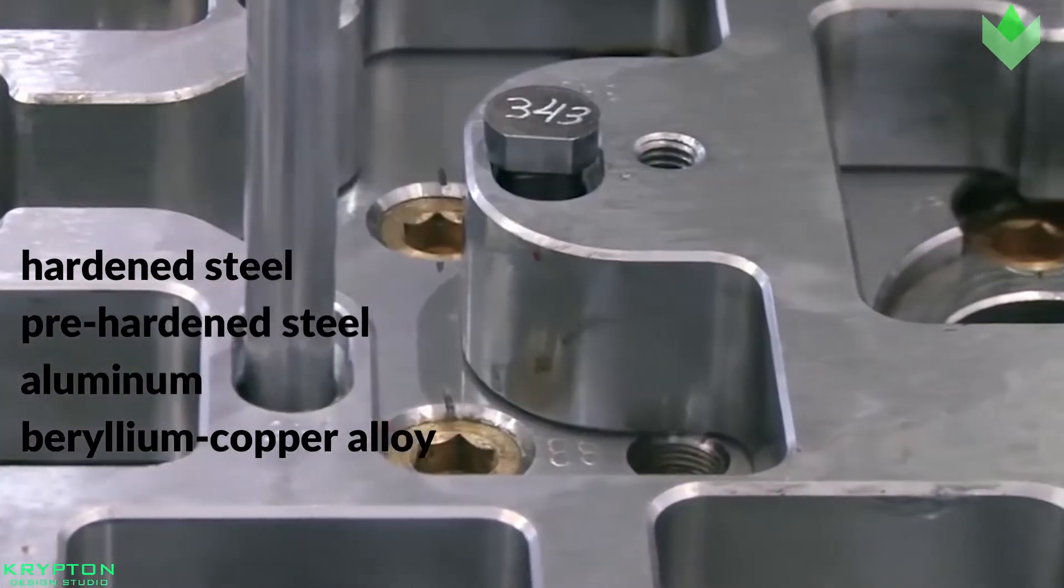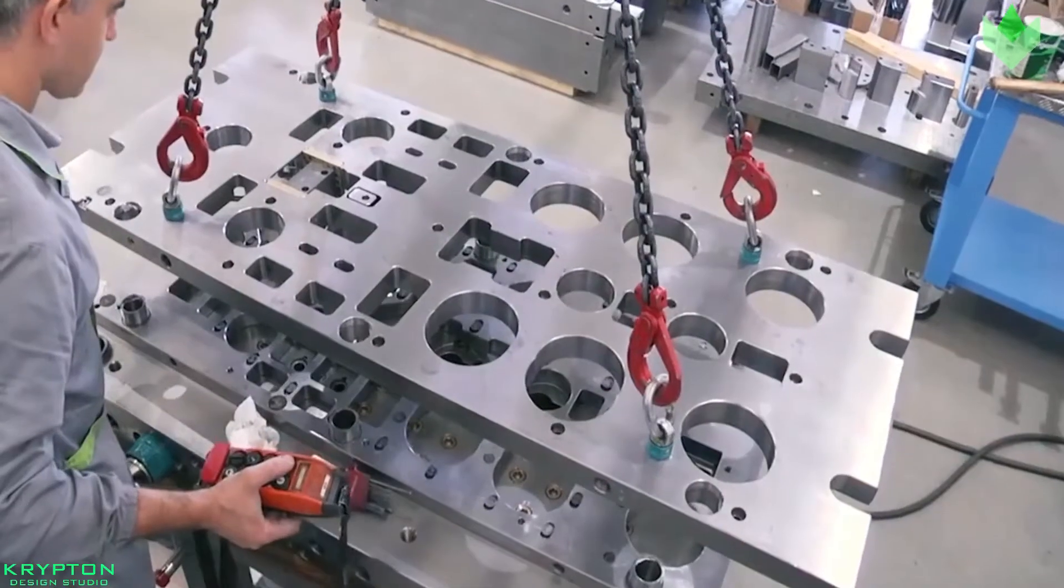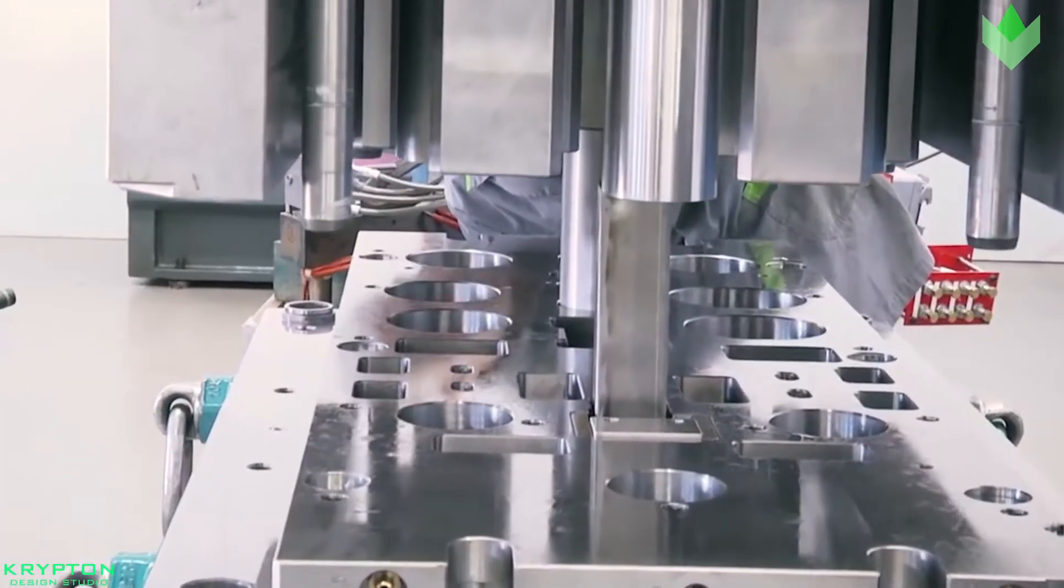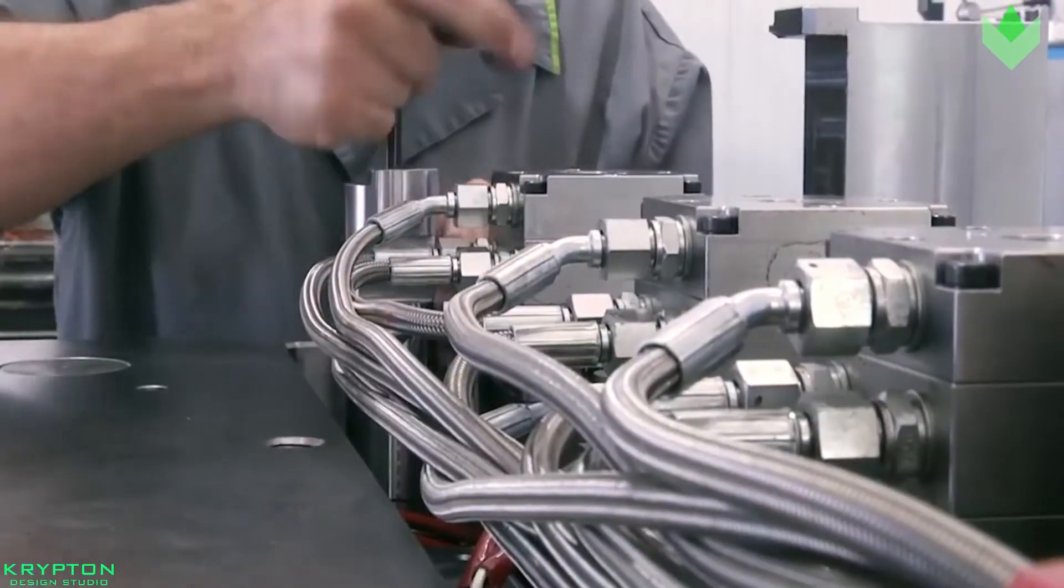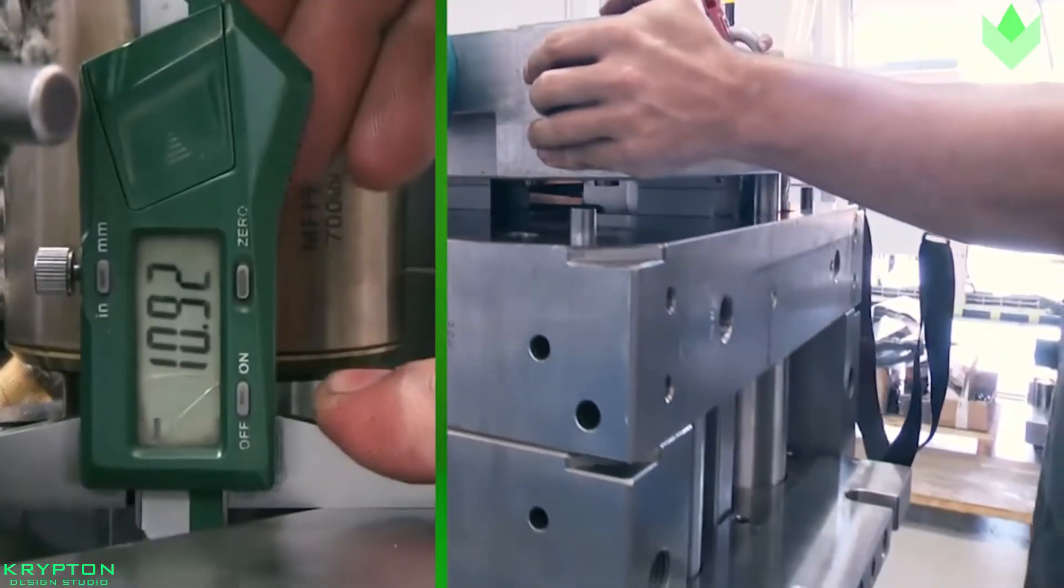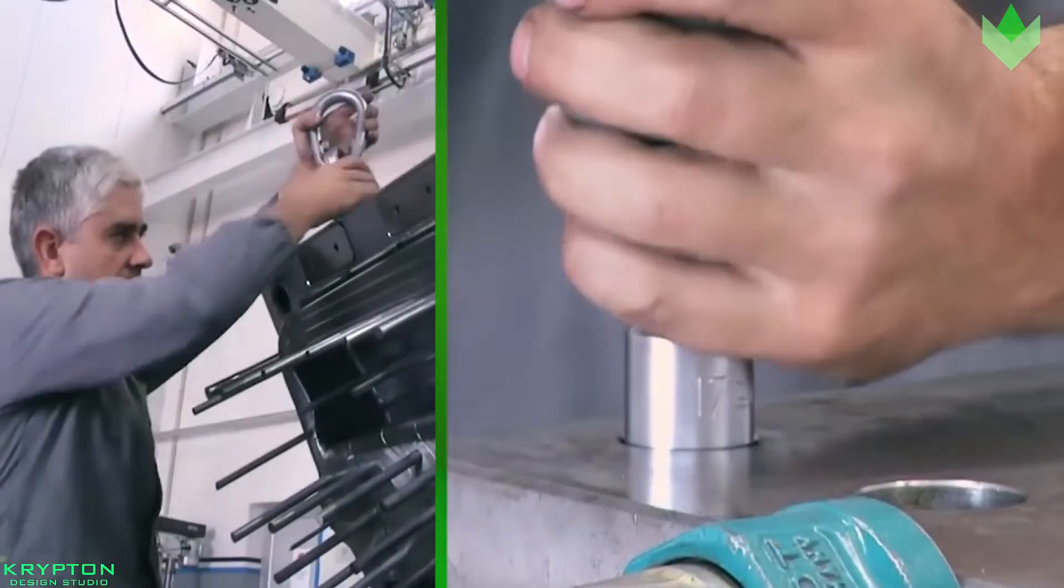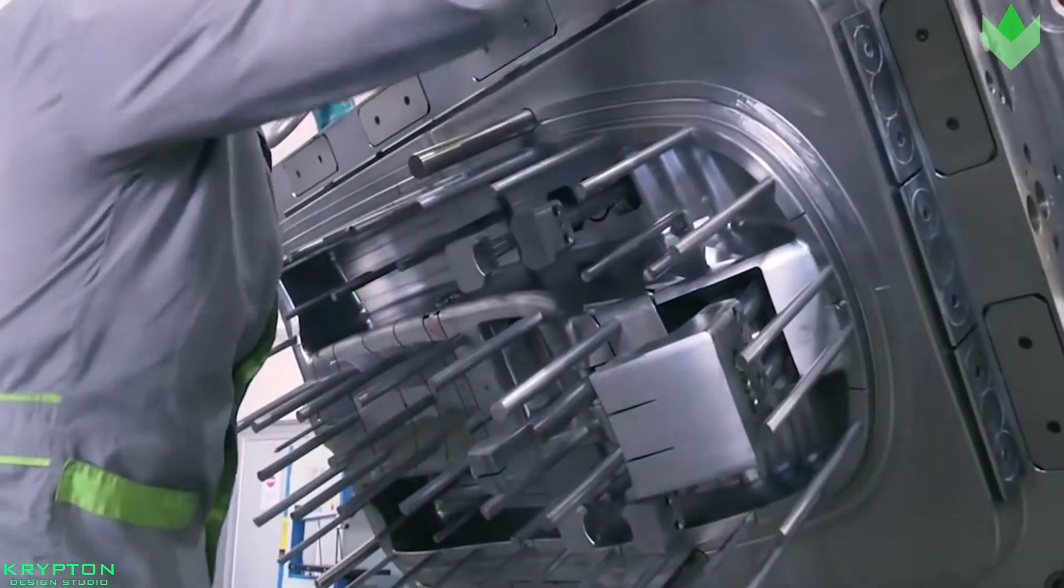Steel molds generally cost more to construct but offer longer lifespan that will offset the higher initial cost or the higher number of parts made before wearing out. Pre-hardened steel molds are less wear-resistant and primarily used for lower volume requirements or larger components.